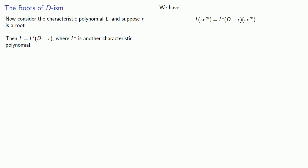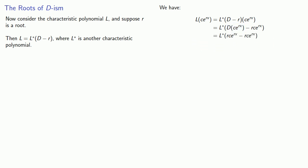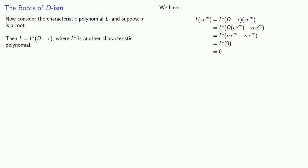L applied to Ce to the RX is L-star applied to D minus R applied to Ce to the power RX. Applying D minus R to Ce to the RX gives D applied to Ce to the RX minus R times Ce to the RX — the derivative of Ce to the RX minus R times Ce to the RX — which equals zero. That means L-star is applied to zero. Since L-star is a linear differential operator consisting of derivatives, applying it to zero gives zero. So Ce to the power RX is a solution to our original differential equation.